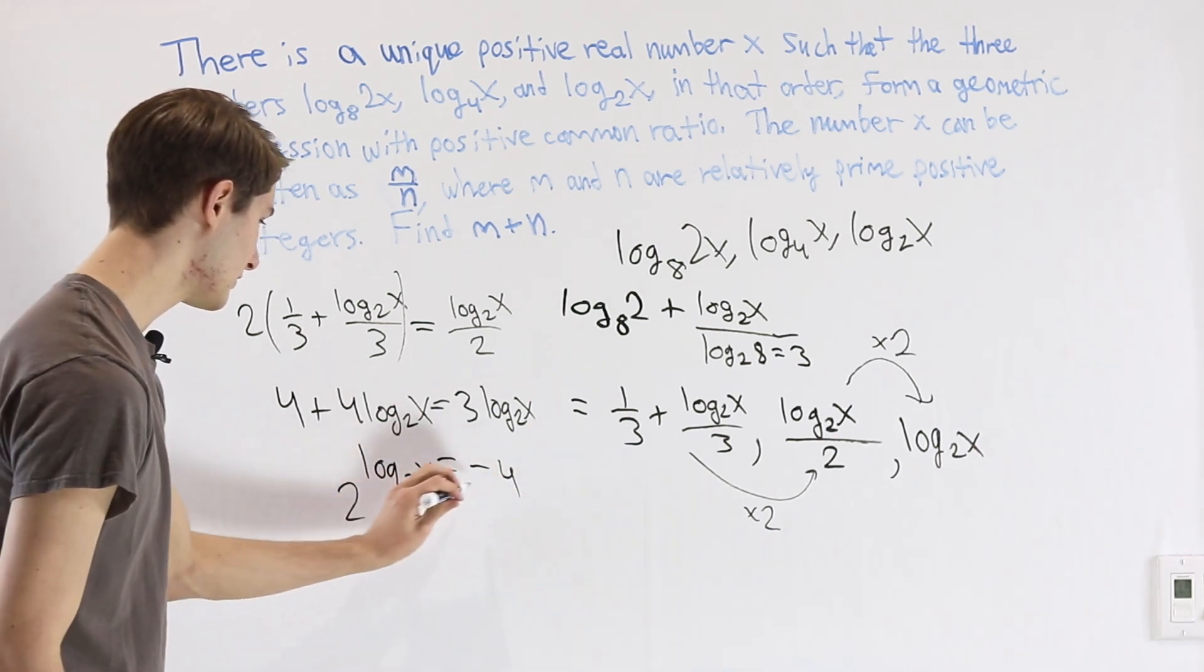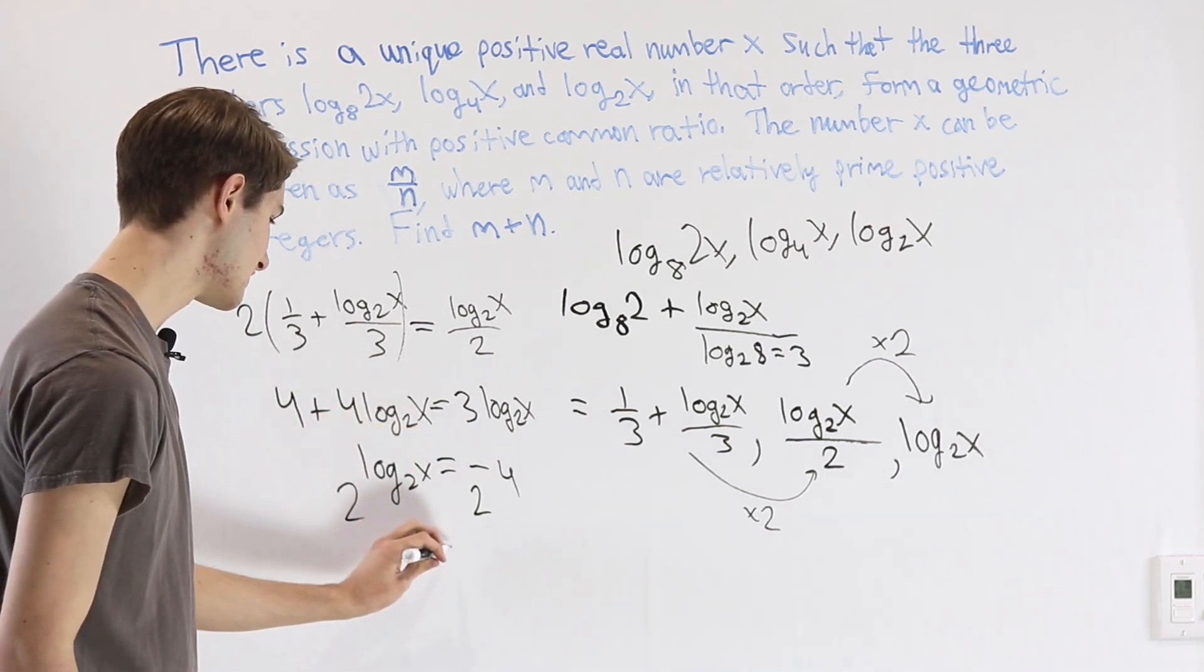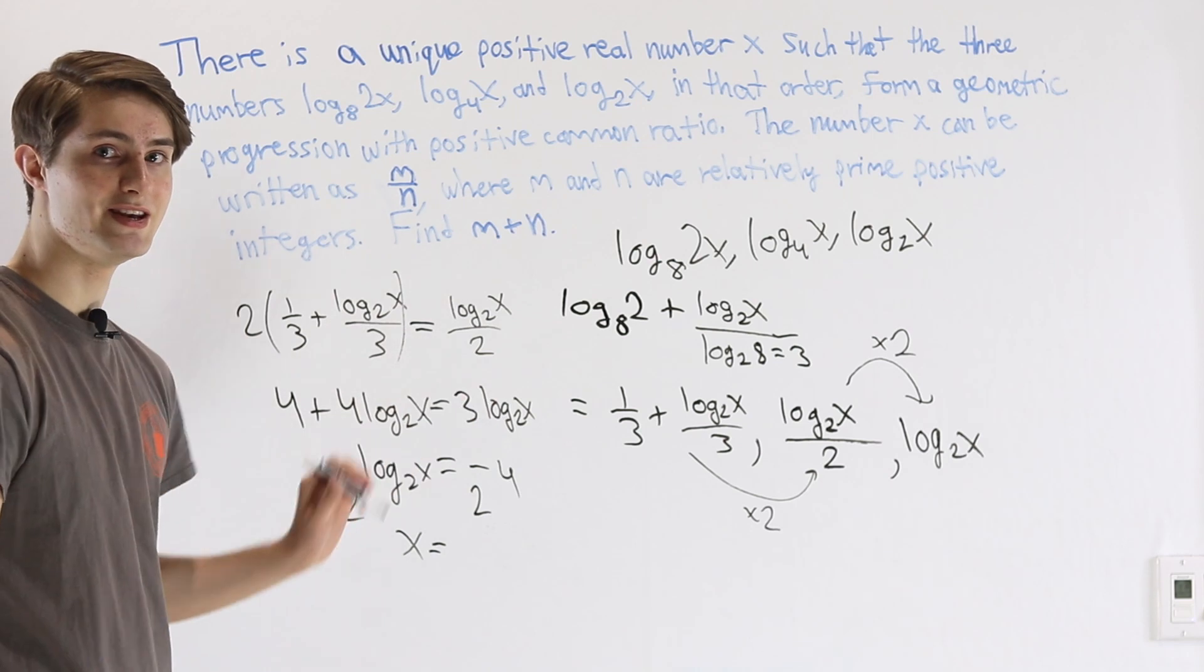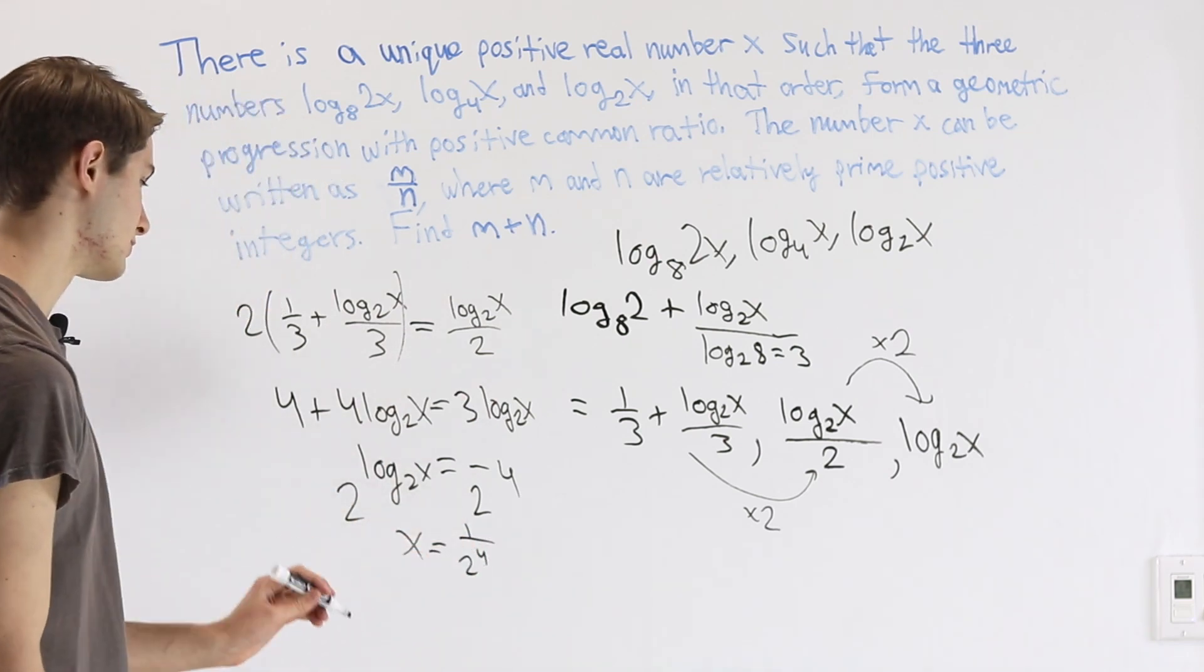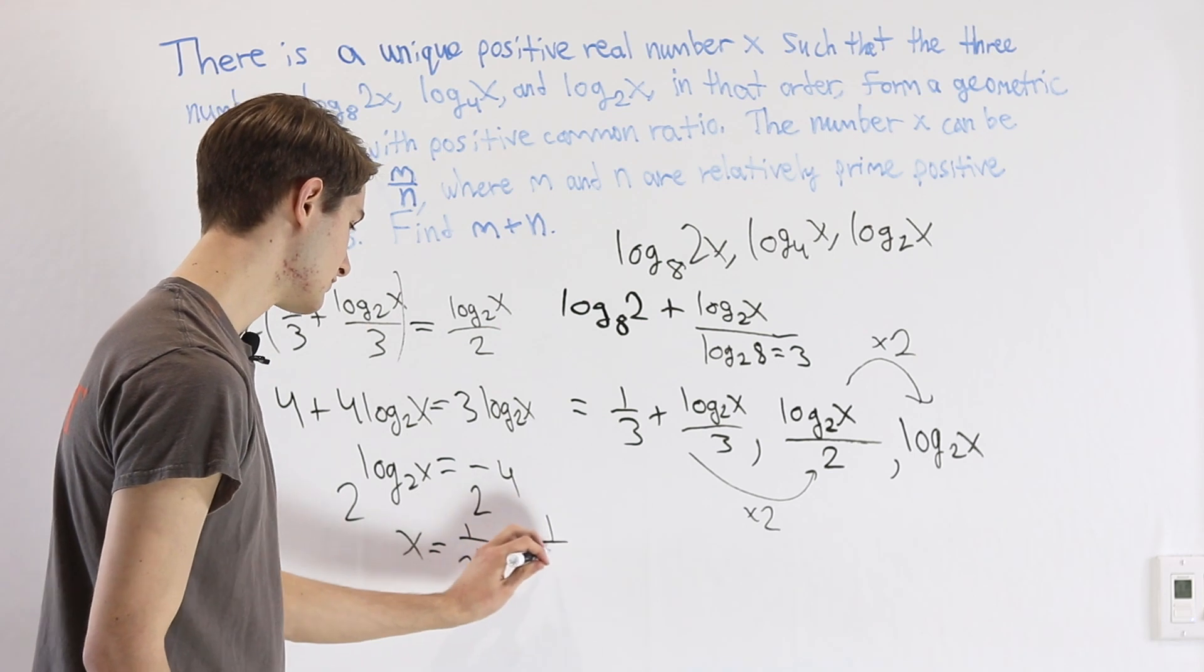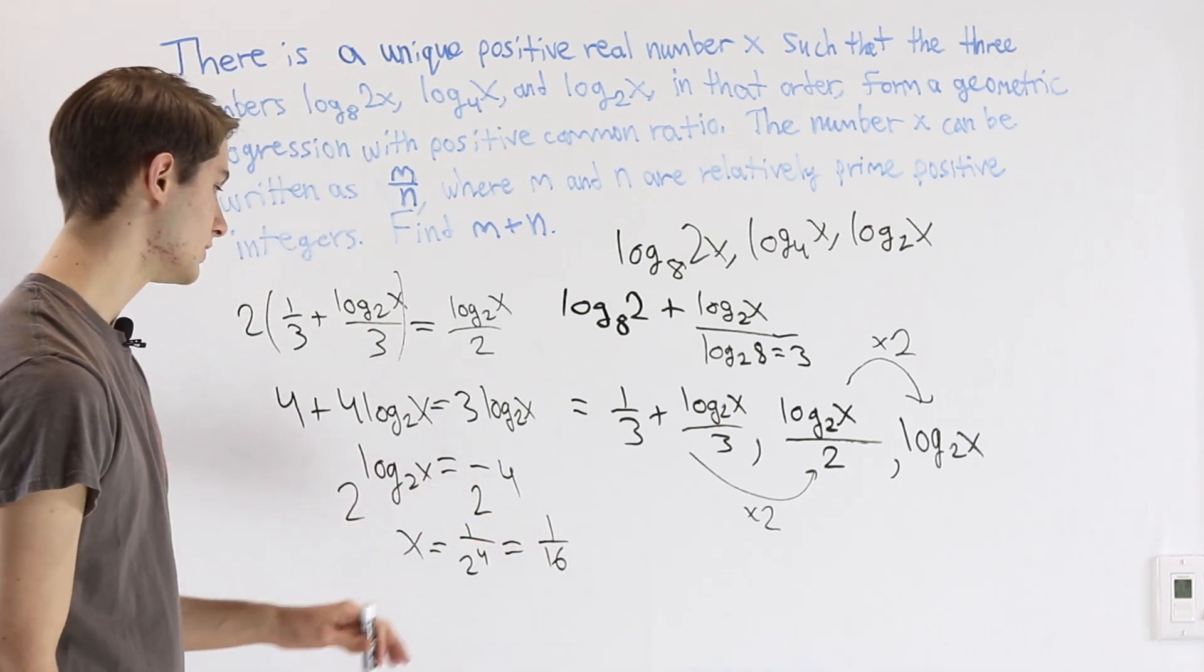Then we take 2 to the power of both sides. 2 to the log base 2 of x is just x, and that equals 2 to the negative 4, which we can write as 1 over 2 to the fourth power. And we know 2 to the fourth power is 16. So x is equal to 1 over 16.